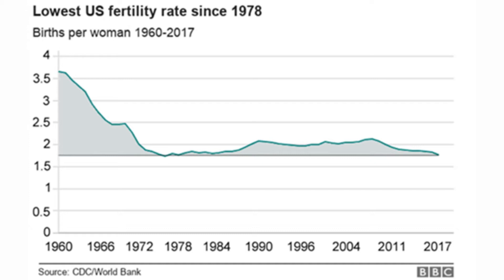The reasons for the decline in the birth rate have been availability of birth control, reduced economic benefit of having children, reduced influence of religious imperative to have children, greater opportunity for women in the workplace, increased interest by women in controlling their bodies and destiny, passage of the baby boom generation bubble through the child-bearing years, and the availability of abortion.